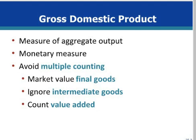To avoid multiple counting of goods, GDP includes only the market value of final goods and ignores intermediate goods, which are goods either purchased for resale or for further processing into final goods. GDP could also avoid multiple counting by counting only the value added at each stage. Value added is the market value of a firm's output, less the value of the inputs that the firm purchased from others.